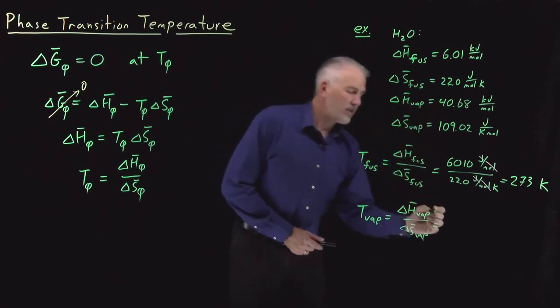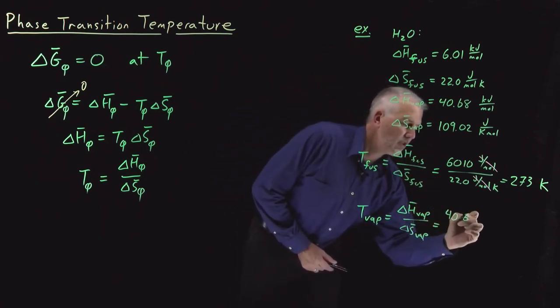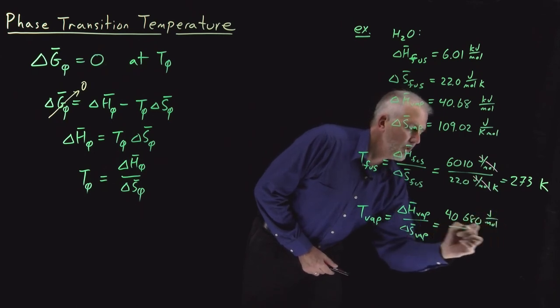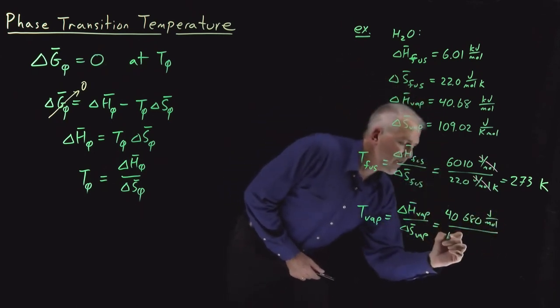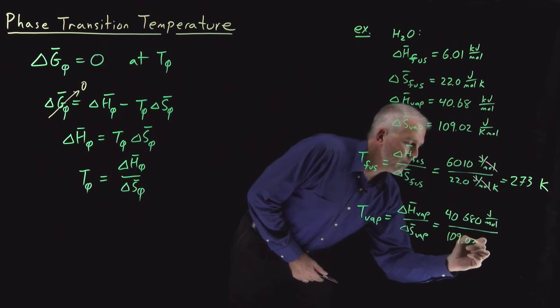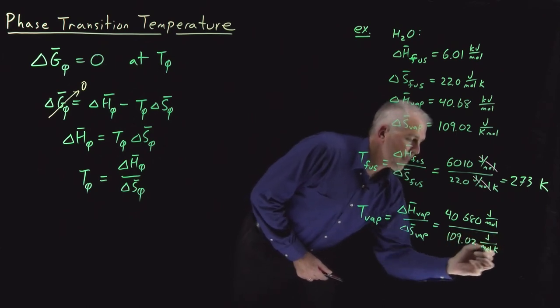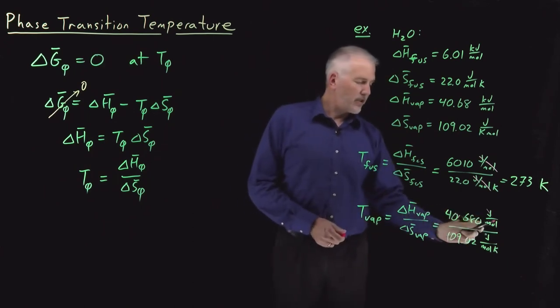The ratio of these two quantities, 40,680 joules per mole, divided by 109.02 joules per mole kelvin. Units cancel in the same way.